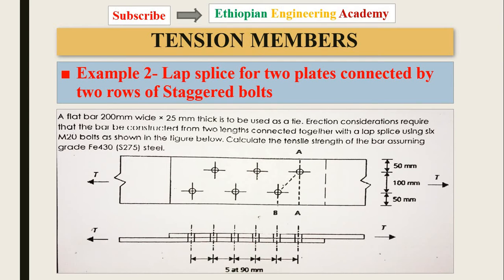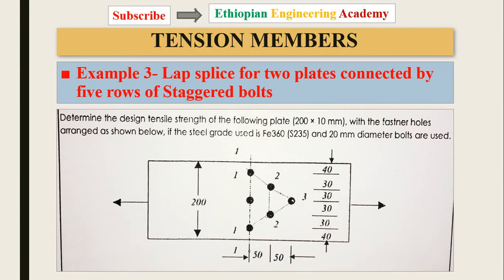We covered Example 1 and Example 2 in the previous part. Now we are going to see Example 3: a lap splice for two plates connected by five rows of staggered bolts. The question is to determine the design tensile strength of the following plate with dimension 200 by 10 millimeters, with fastener bolts arranged as shown below, using the given steel grade and bolt diameter.